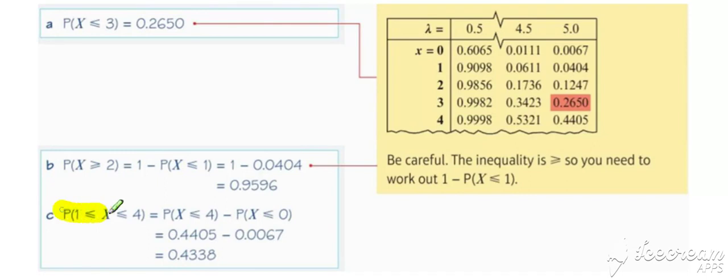For x being between two values, between one and four, we need to rearrange into inequalities that involve just the less than or equal to. Then we can look up less than or equal to four, and we can look up less than or equal to zero, which is the same as equal to zero, and subtract one away from the other to get our answer.